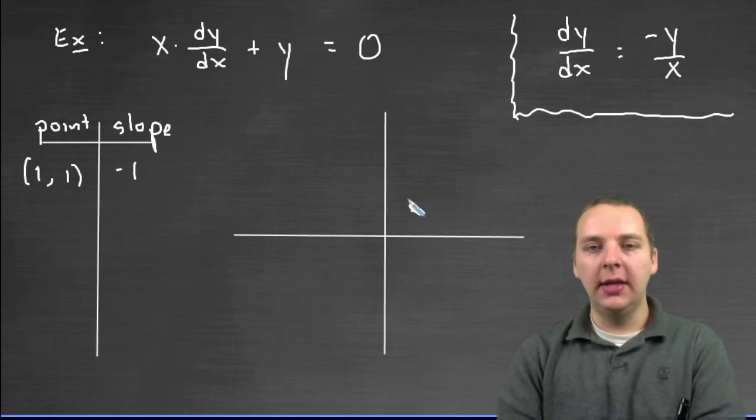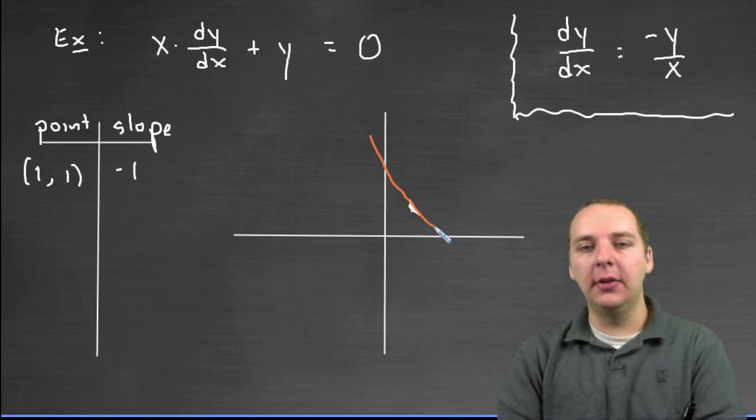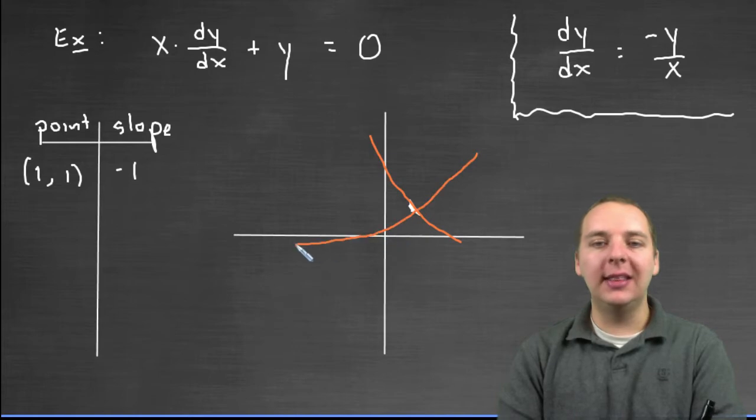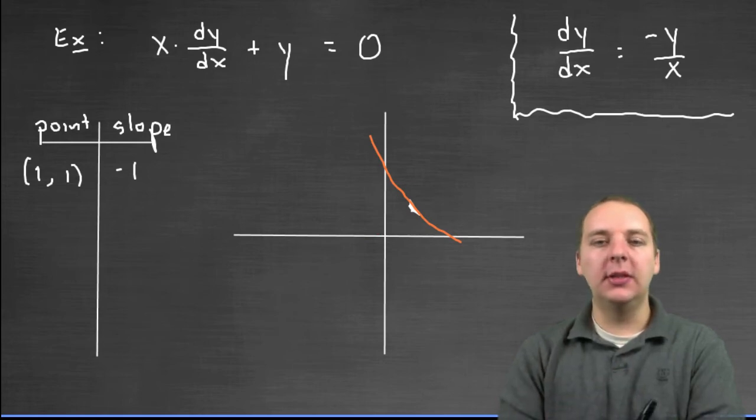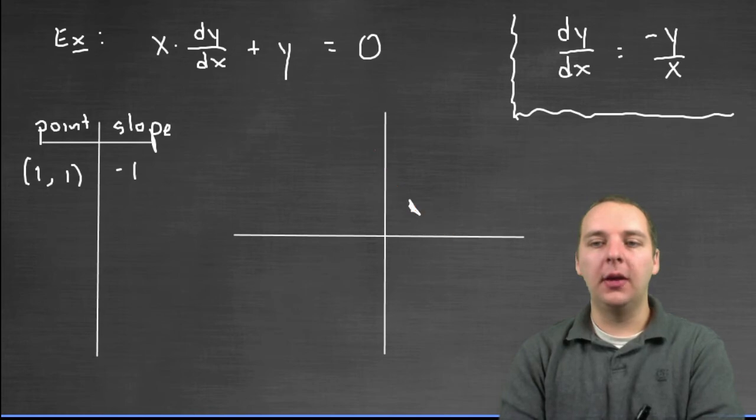So right here, if a solution curve went through this point, it would have to go through that point this way. It would have to go through this point this way. You could not have a solution curve that went through (1, 1) like this, it wouldn't have the right slope. So we've discovered a little tidbit about what the solution curve looks like if it went through (1, 1).